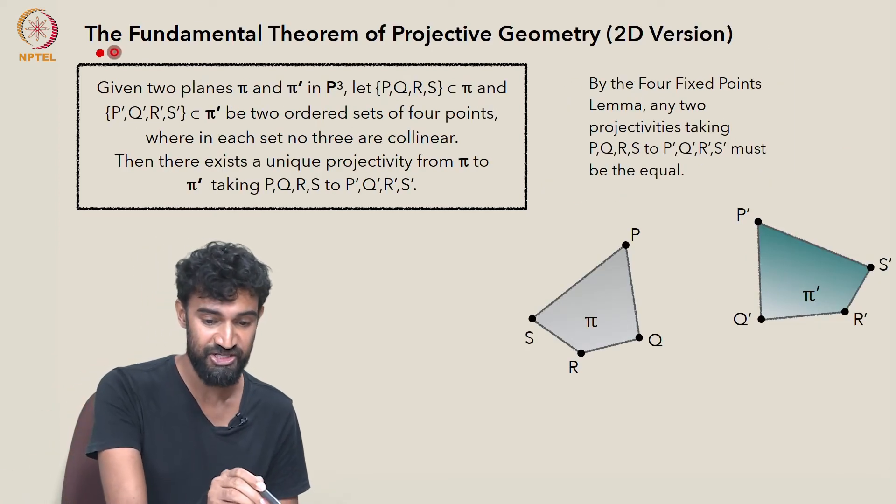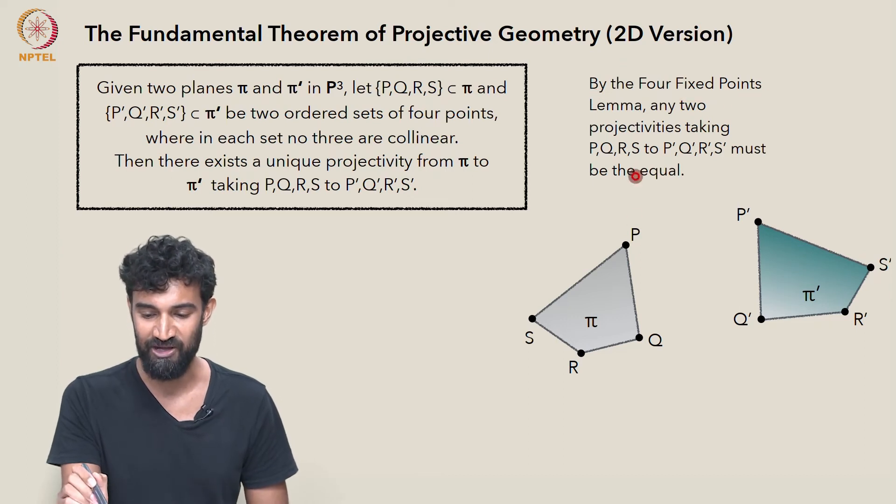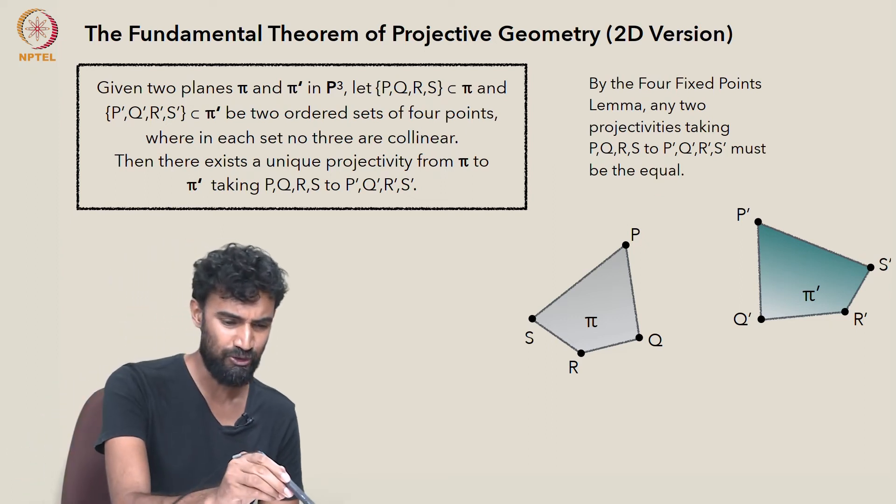Now let's return our attention to the fundamental theorem of projective geometry. By the four fixed points lemma, any two projectivities taking P, Q, R, and S to P′, Q′, R′, and S′ must be equal. And how do we see that?